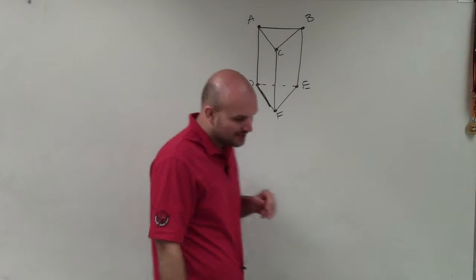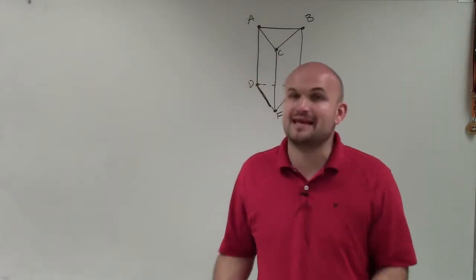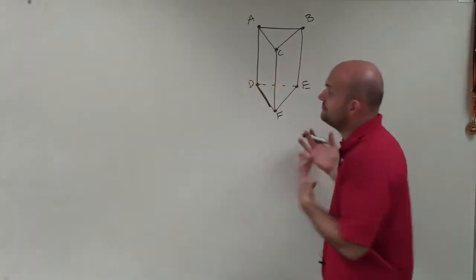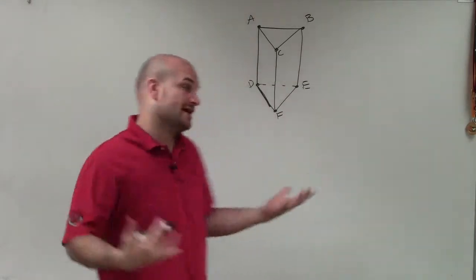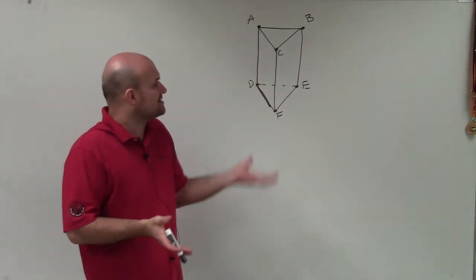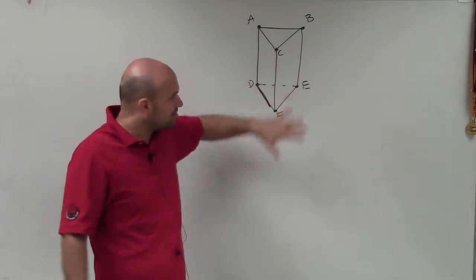Welcome. Alright, so what I want to do is show you how to label a point, line, and plane given a figure. So in this case, we have a triangular prism, which is kind of like a triangle sitting on its base, kind of like sitting on a plane over here.